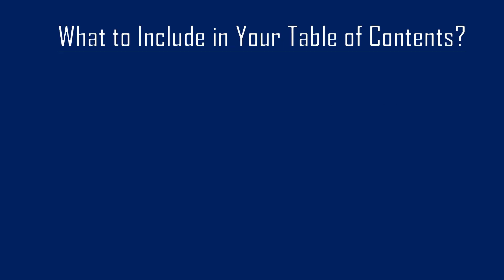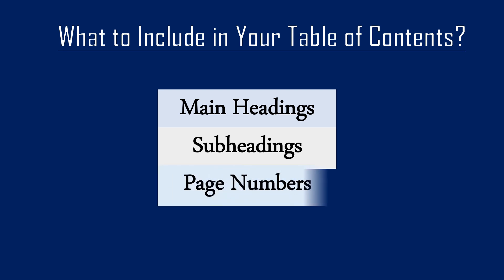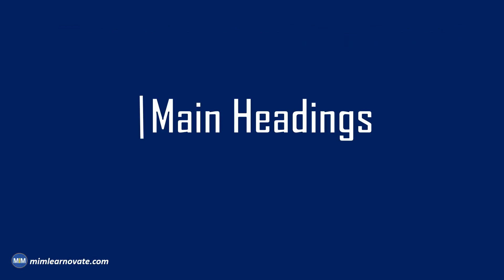What to include in your table of contents: main headings, subheadings, and page numbers. Main headings include the main sections or chapters of your research paper. These headings represent the major topics you will be addressing and should be descriptive enough to give readers an idea of the content covered in each section.